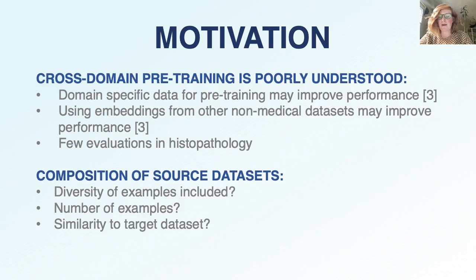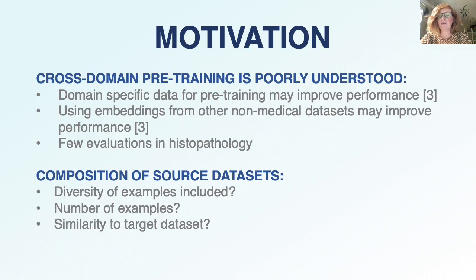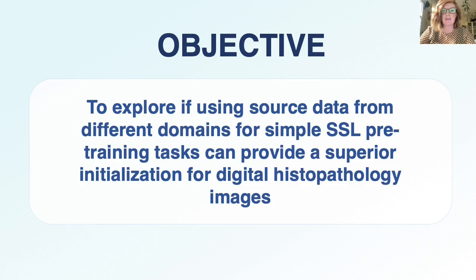Our work was motivated by two primary areas. Currently, the impacts of cross-domain pre-training are poorly understood, specifically looking at research within the medical imaging domain. Some research studies have found that domain-specific data for pre-training, such as what we would be doing in self-supervised learning, improves performance, where others have found the opposite — that using embeddings from non-medical datasets such as natural images or textures provides higher performance. Additionally, very few of these evaluations have been completed in histopathology datasets. Furthermore, little research has been conducted into what composition of source datasets used for self-supervised pre-training results in better performance. The objective of our research was to explore if using source data from different domains for simple self-supervised pre-training tasks can provide a superior initialization for digital histopathology images.